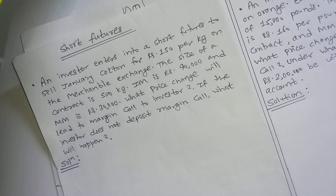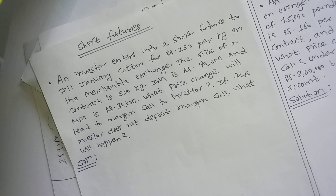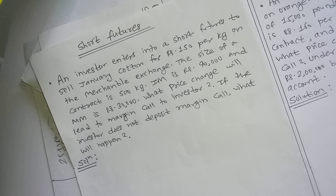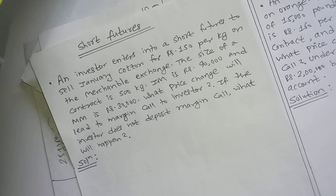I have a short future question in this video. An investor enters into a short future to sell January cotton for Rs. 150 per kg on the mercantile exchange. The size of the contract is 500 kg. The initial margin is Rs. 40,000 and the maintenance margin is Rs. 30,000. What price change will lead to a margin call to the investor? And if the investor does not deposit the margin call, what happens?